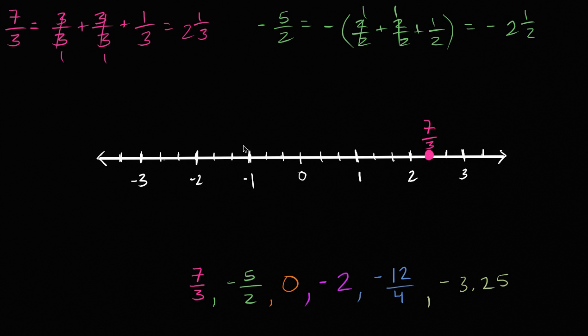Let's see, negative 1, negative 2, and then negative 2 and 1 half is going to be halfway between negative 2 and negative 3. So it's going to be right over there. So that is negative 5 over 2.